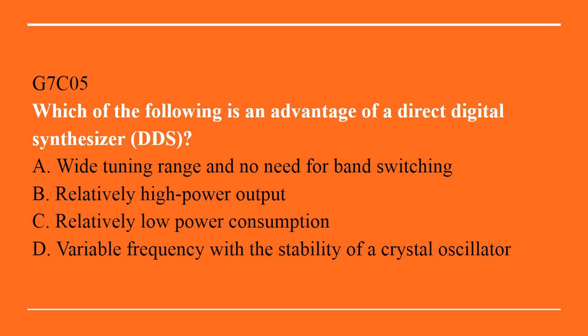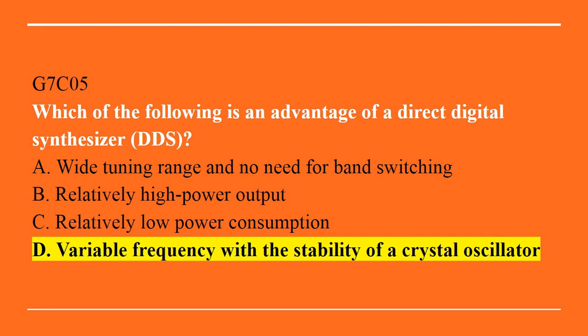G7C05: Which of the following is an advantage of a direct digital synthesizer (DDS)? A. Wide tuning range and no need for band switching. B. Relatively high power output. C. Relatively low power consumption. D. Variable frequency with the stability of a crystal oscillator. Answer is D. Variable frequency with the stability of a crystal oscillator.